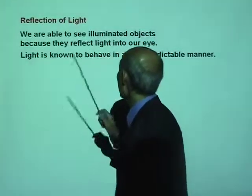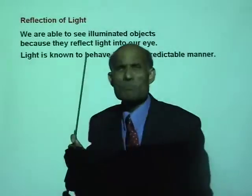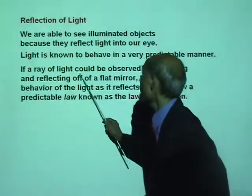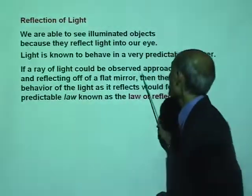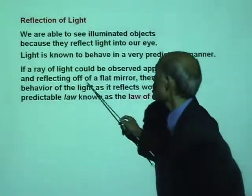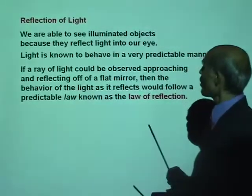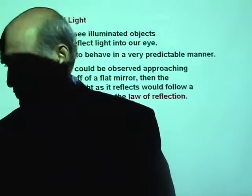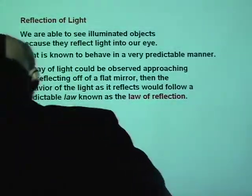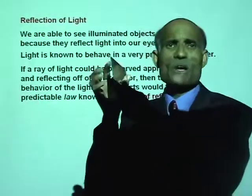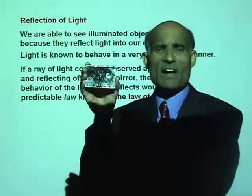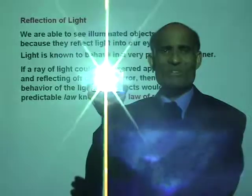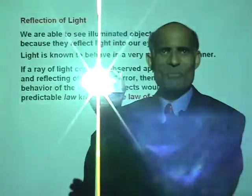Light is known to behave in a very predictable manner. If a ray of light could be observed approaching and reflecting off a flat mirror — if you take a flat piece of mirror, you can see I am actually holding a mirror. The light is reflected back onto the camera.